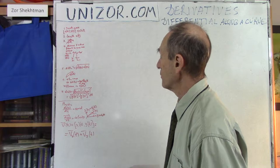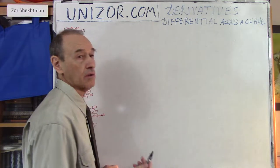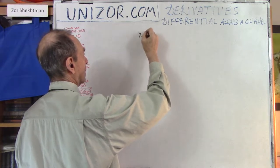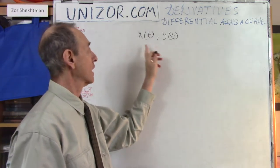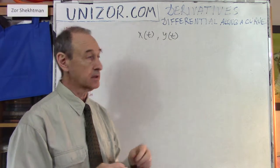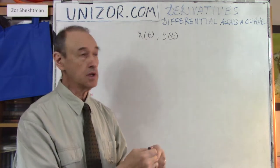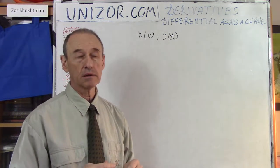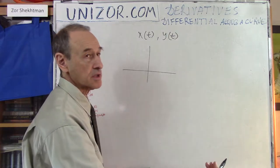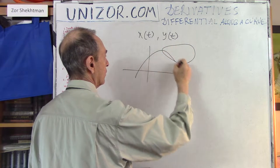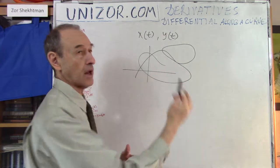So we will talk about differential along a curve. First of all, let's just recall that we will use the definition of a curve as basically a parametric pair of functions. Basically, t is a parameter, x and y are coordinates of a point, and as t changes value within a certain interval from a to b, x(t) and y(t) are smooth functions, which result in some kind of a curve in a coordinate system. So it's not like a function where for each x you should have only one particular value of y.